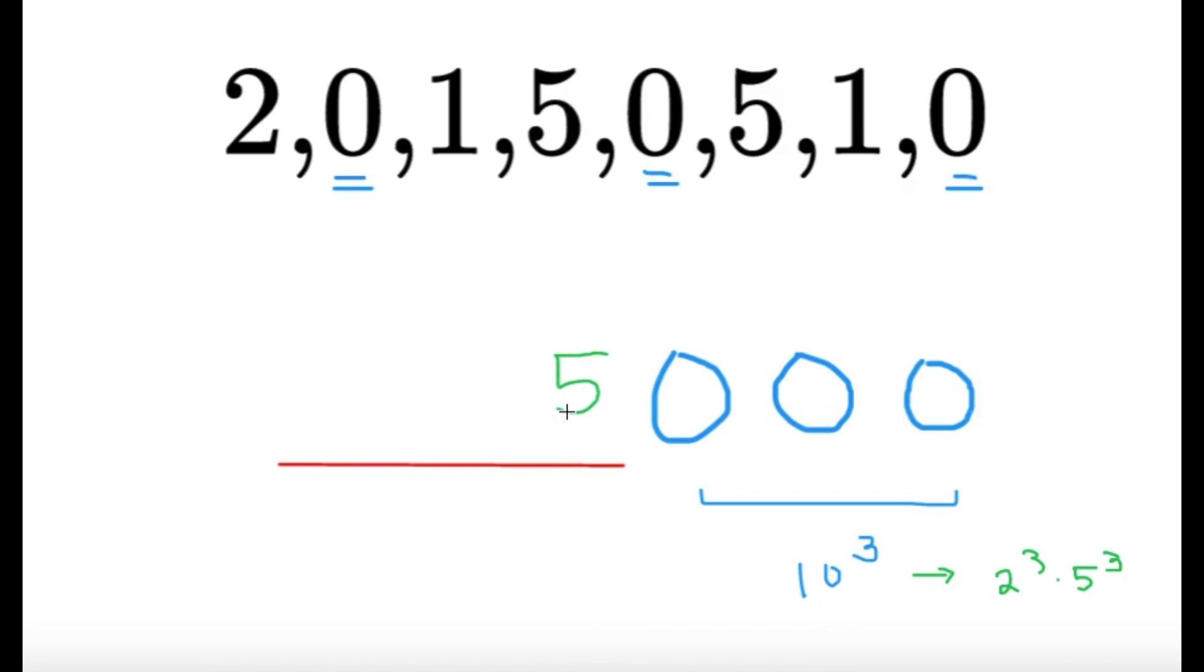Then we try to go further. What can we put here next to the 5 so that the number will be divisible by another power of 5? We can put 25 just because that's technically 5 squared.